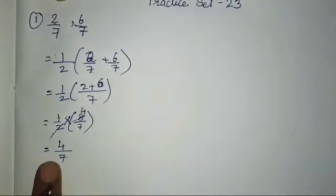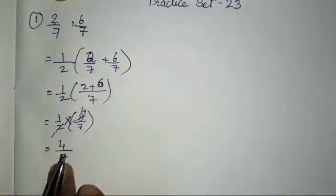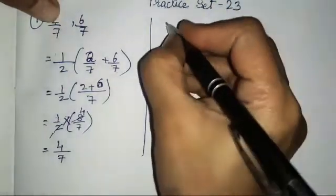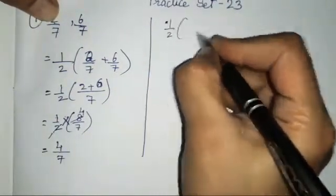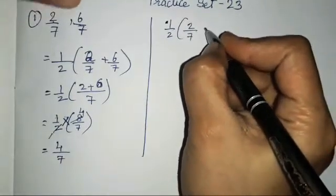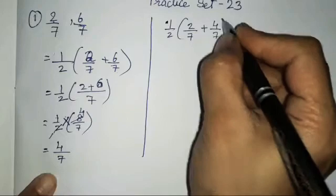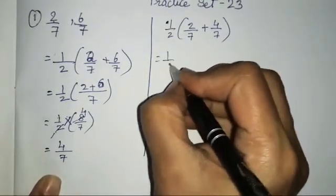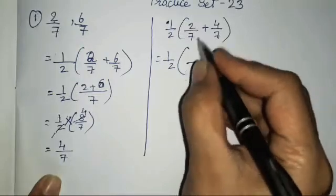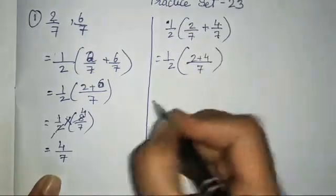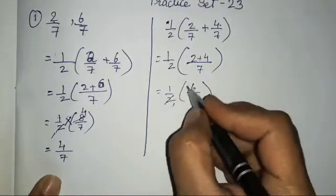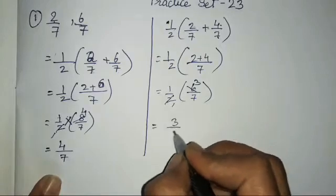We have got the new fraction 4/7. We will use this and the first fraction for the second one. So it is going to be half of (2/7 + 4/7). The denominators are the same, so we can add directly: 2 plus 4 is 6/7. Multiplying, 2 ones are 2, so 1 into 3 gives us 3. The answer is 3/7.